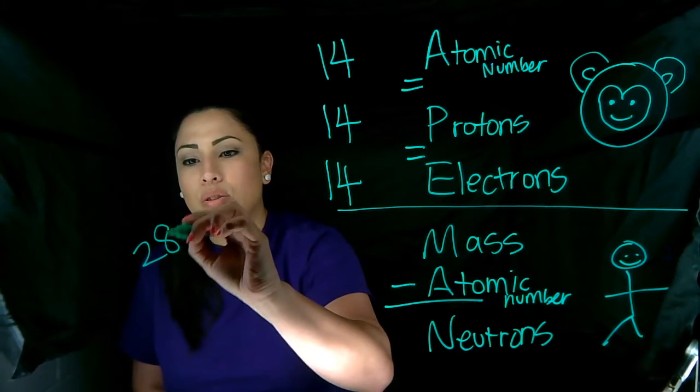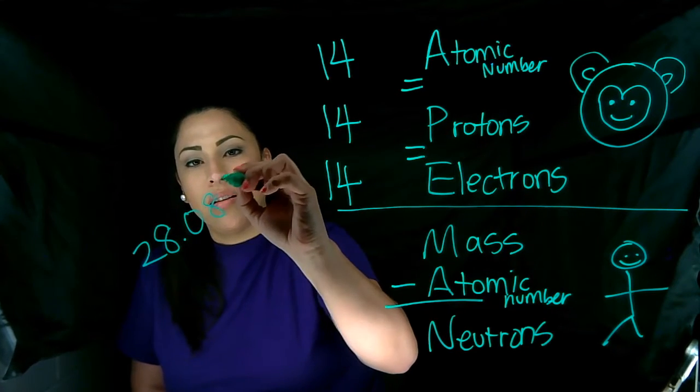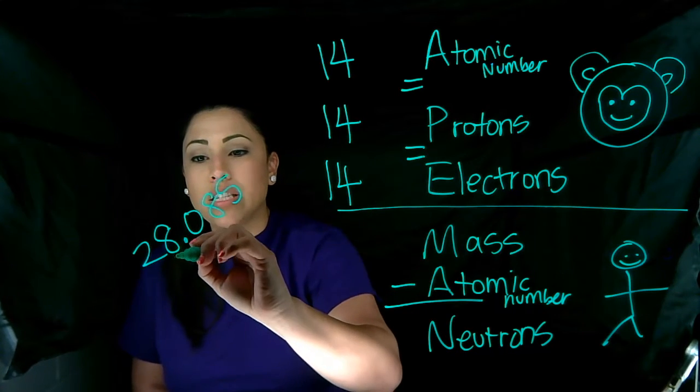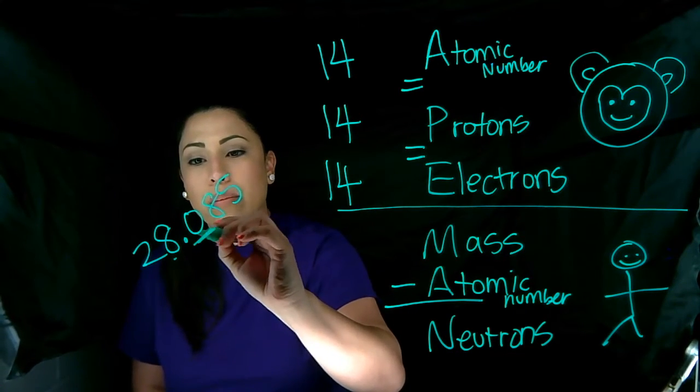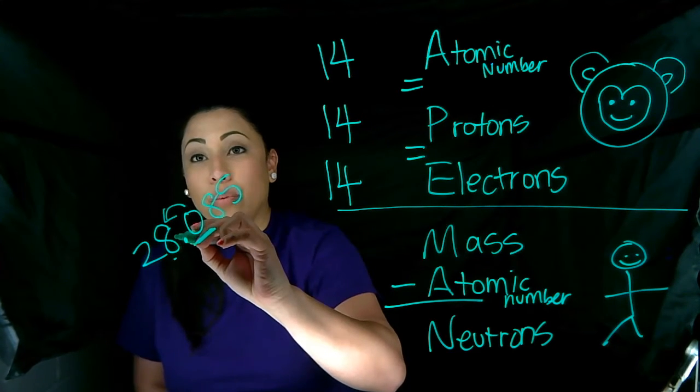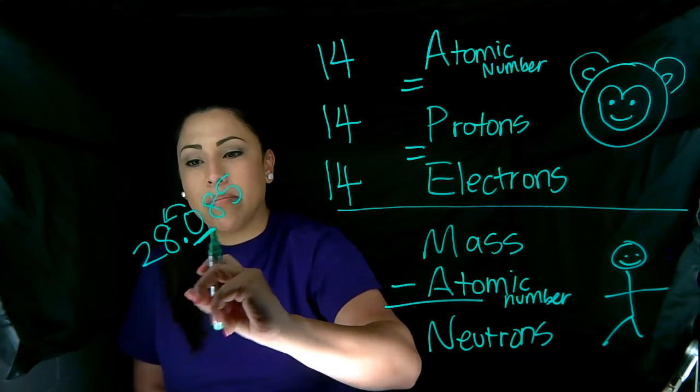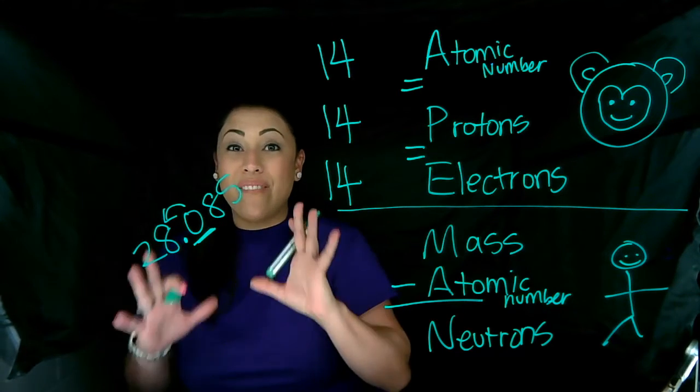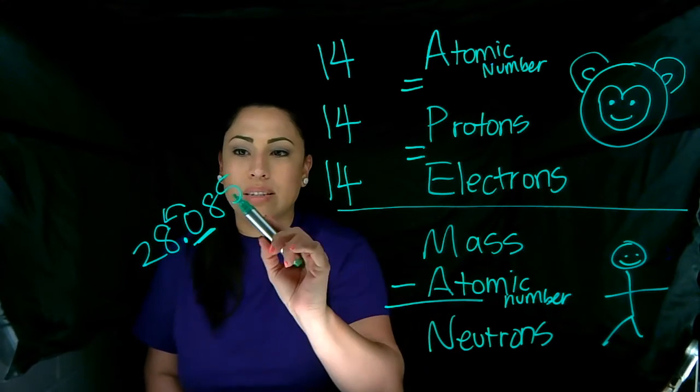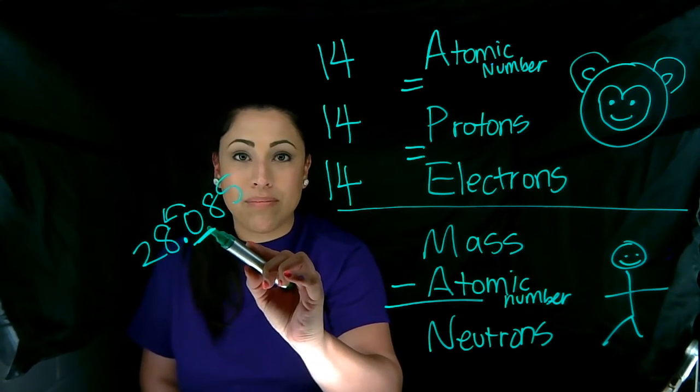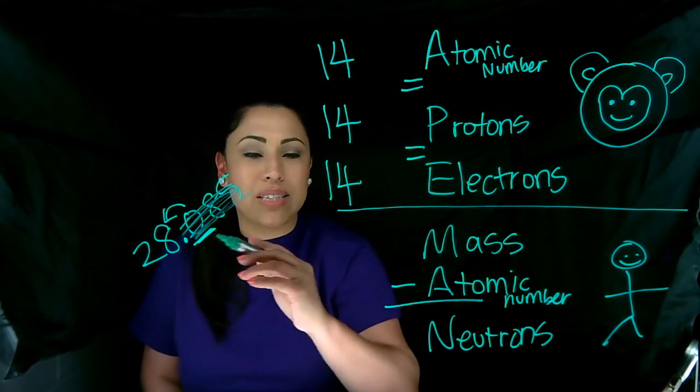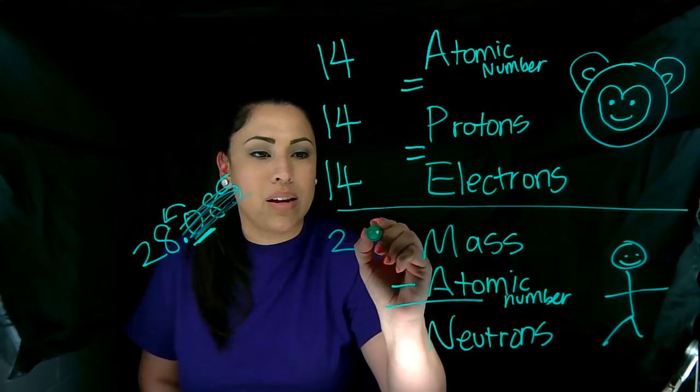Remember, you don't have to write this. But, when we're looking for mass, we're looking for a whole number. So we need to round. So we're going to look at the number right after and see if it's going to raise or stay the same. So, the rule is, five or more, raise the score. Four or less, get rid of the rest. So what is this number right after the decimal? Four or less, get rid of the rest. So our mass for silicon is going to be 28.